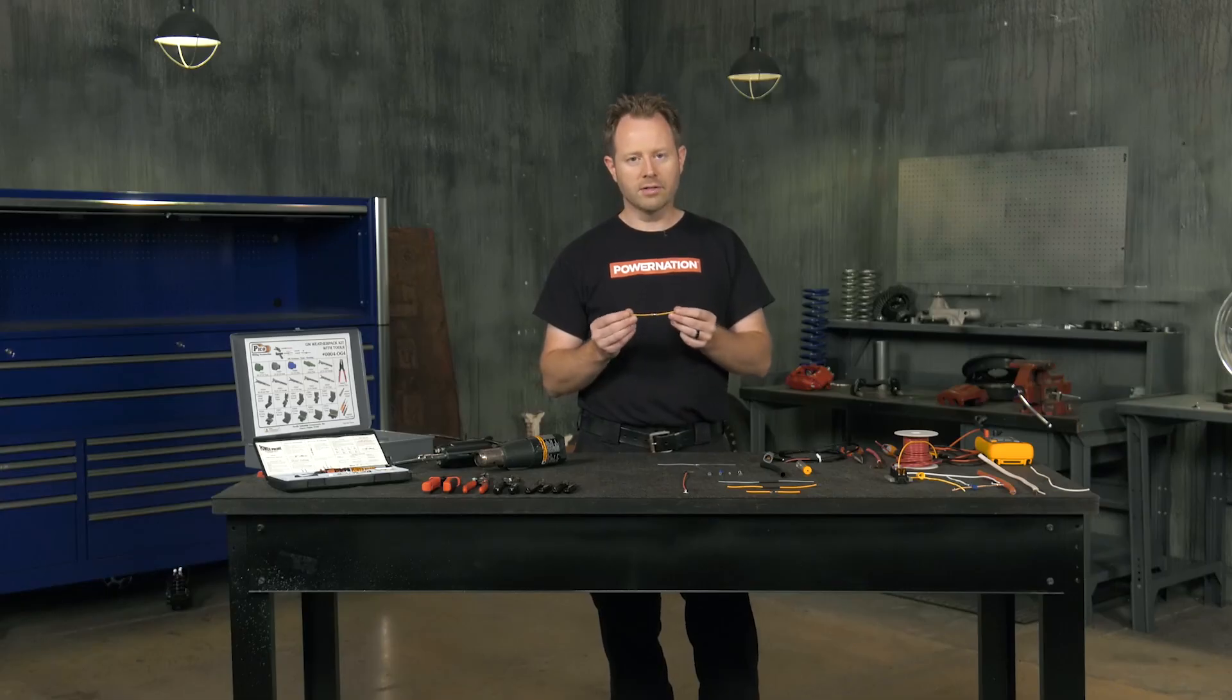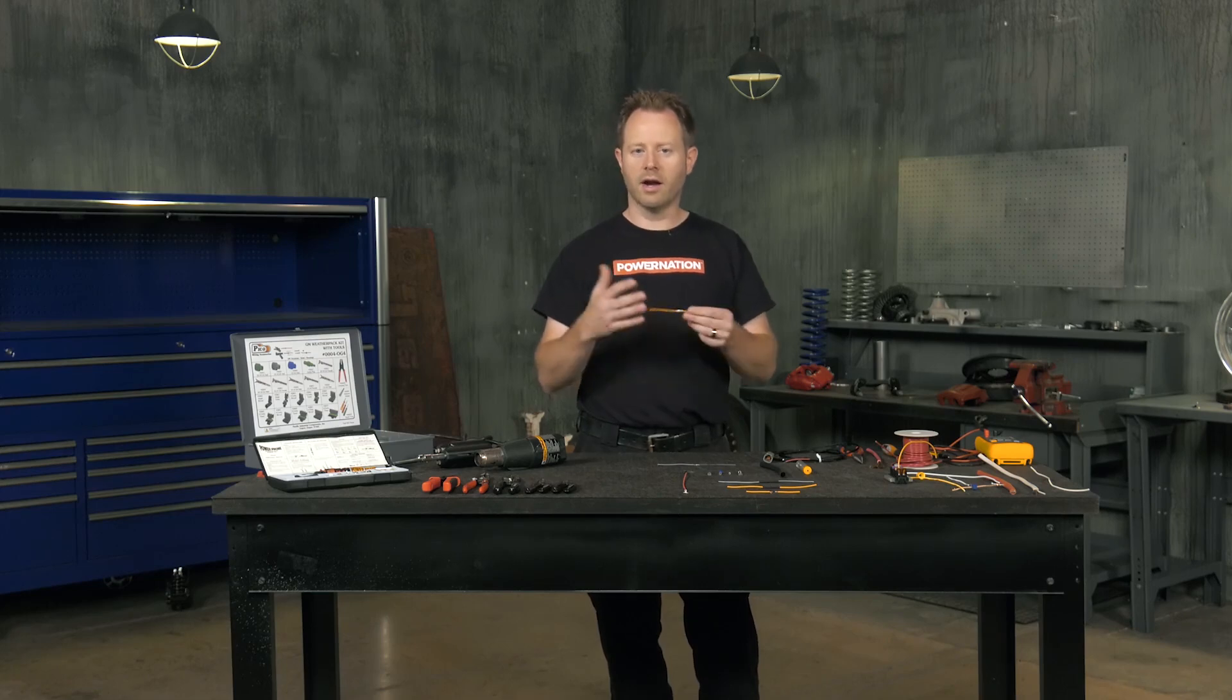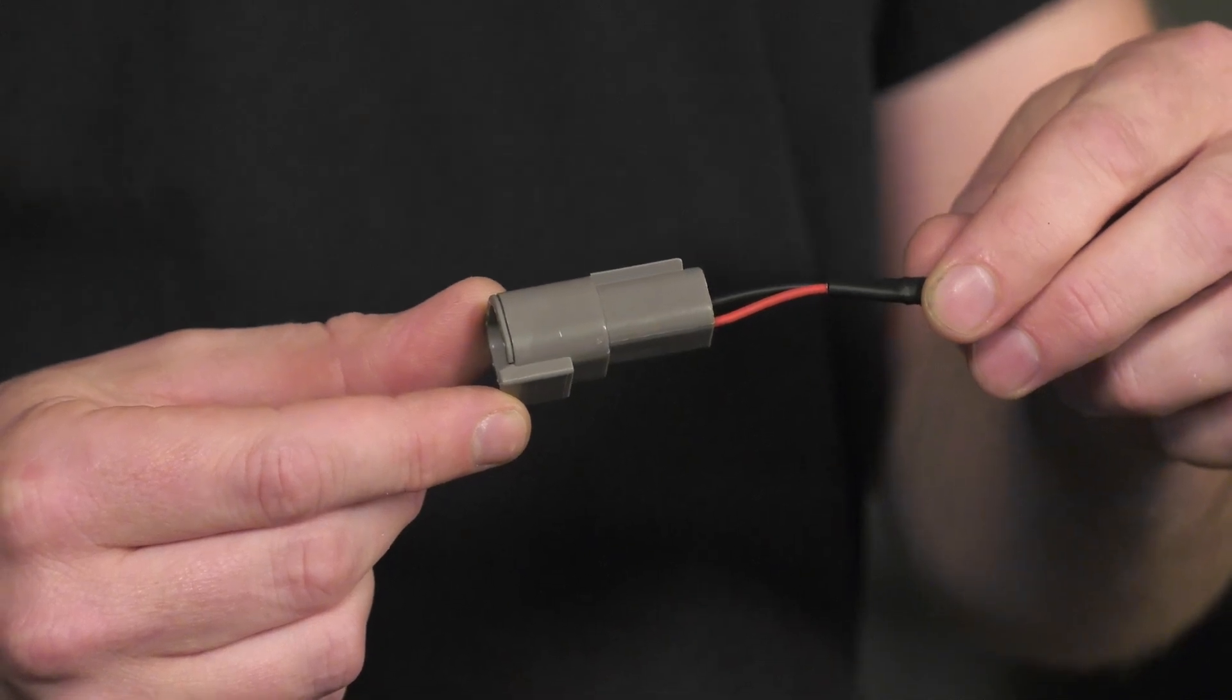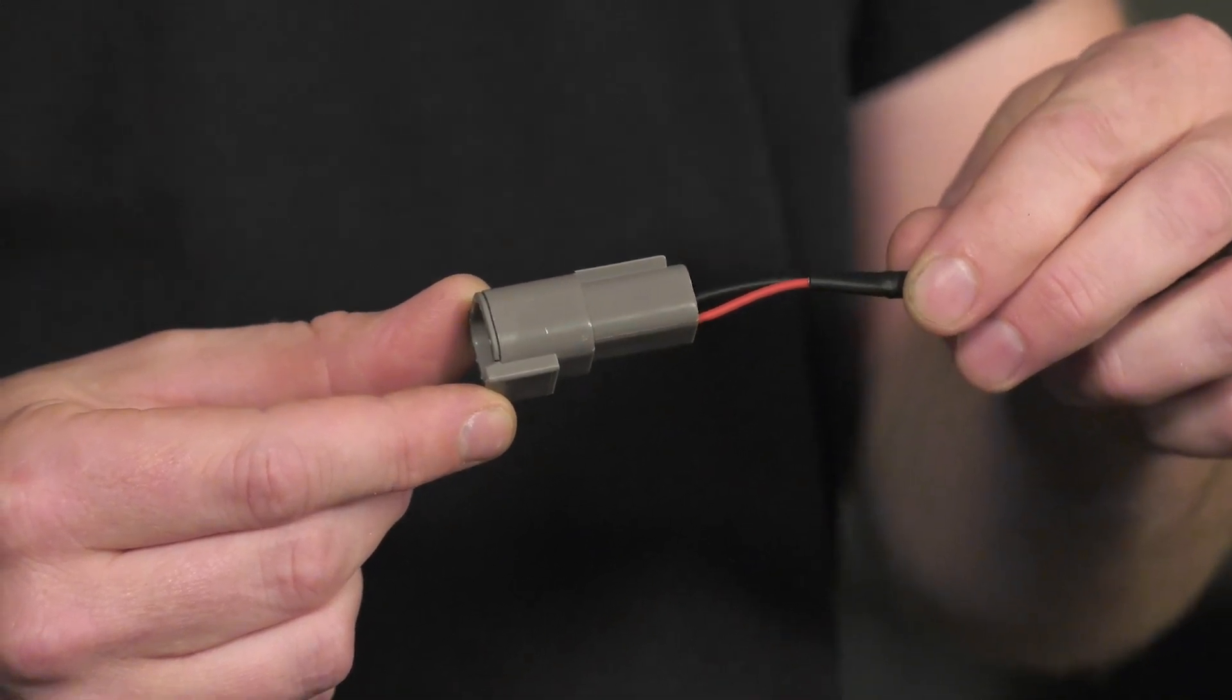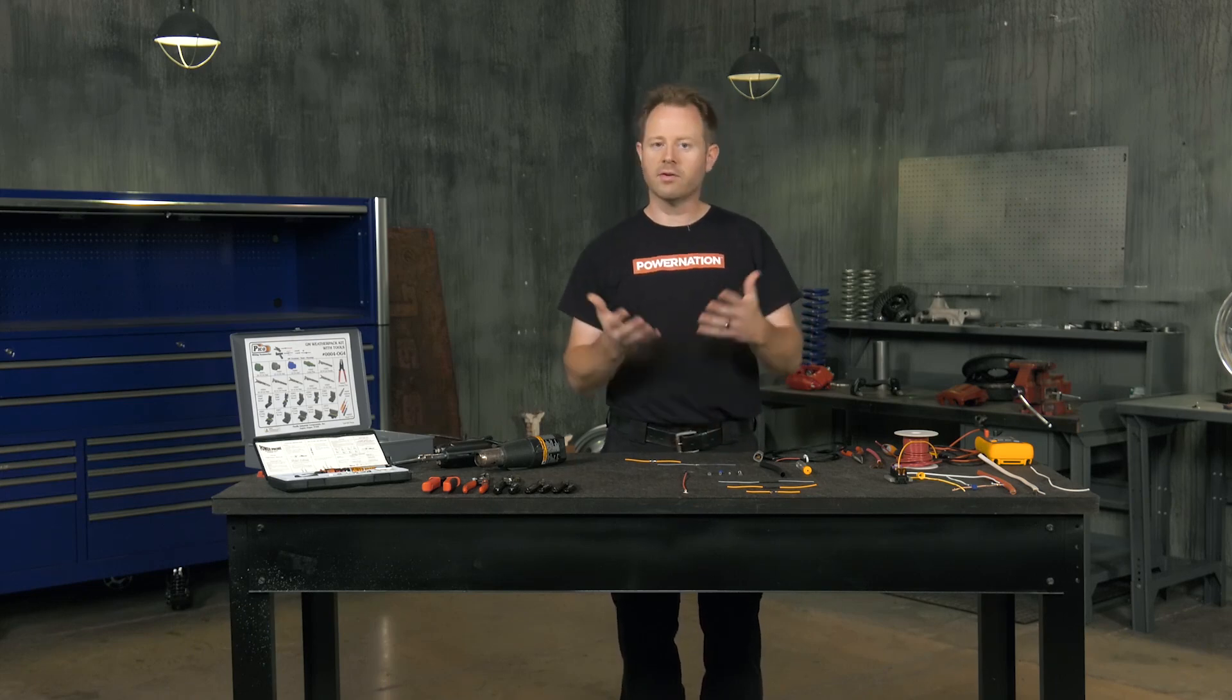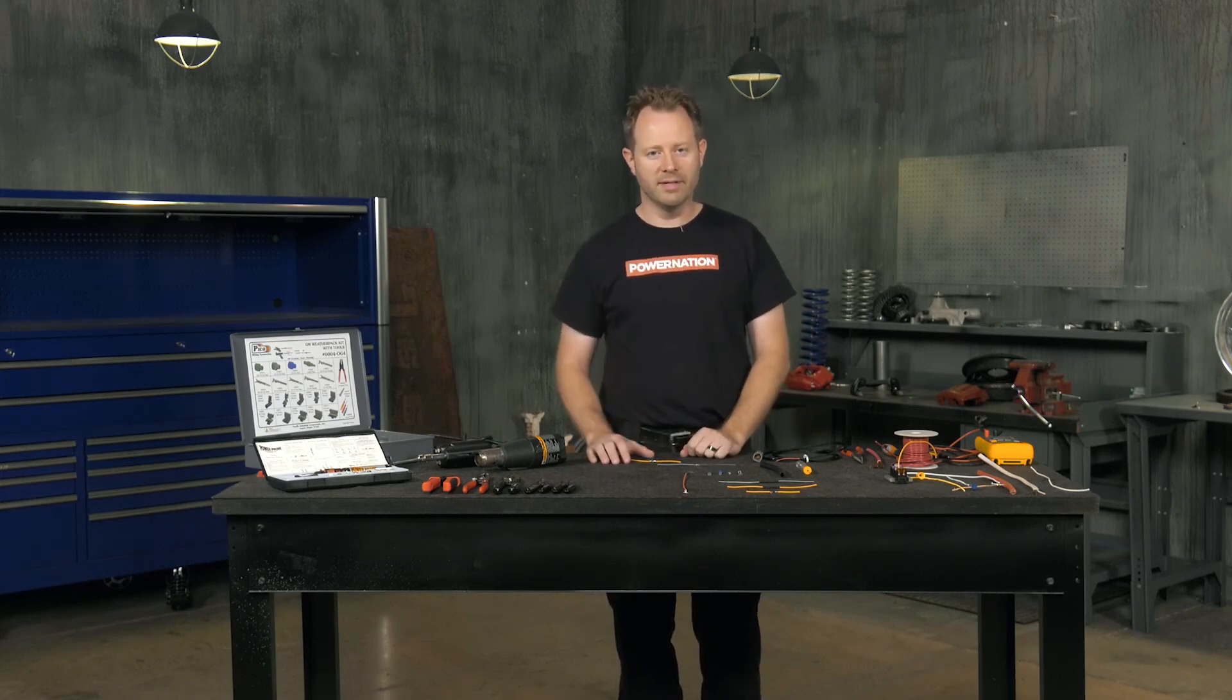So the crimped connection to me is the way to go in an automotive application just because it moves around. But like I said, if it's in a housing, the connector, it's supported on both sides and it doesn't have that room to bounce around and break. So crimping versus soldering, I'll leave it up to you, but there's my opinion.